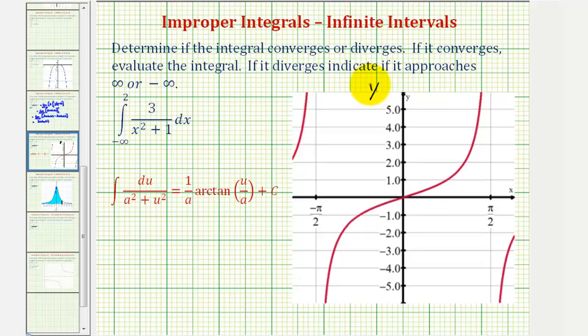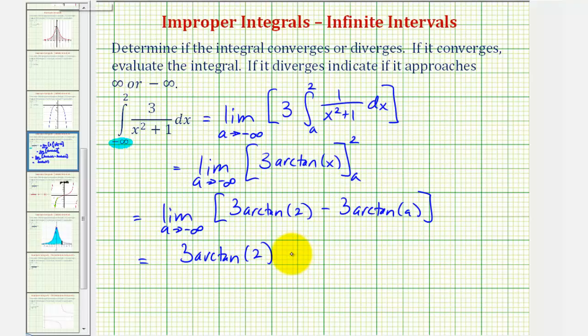So here we have y equals tangent x. And notice, as the tangent function values approach negative infinity in this direction, notice how the angle is approaching negative pi over two. And therefore, we'd have minus three times negative pi over two.